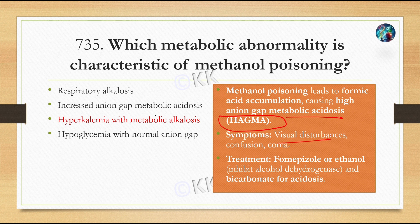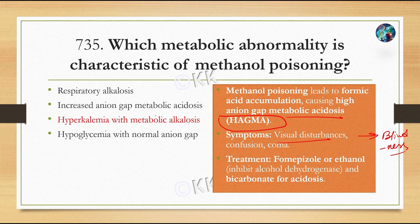A key feature of methanol poisoning is visual disturbance. Industrial alcohol contains methanol to prevent consumption, but if ingested it causes confusion and blindness. Treatment includes fomepizole or ethanol, and bicarbonate for acidosis.